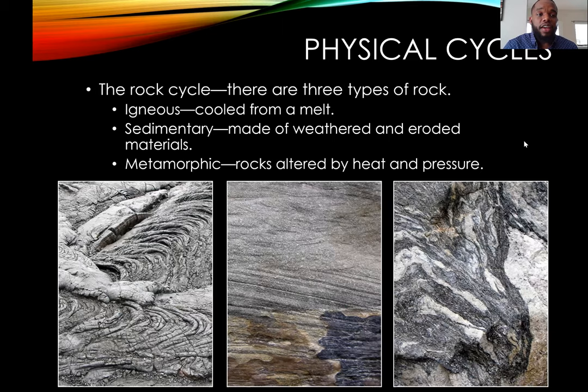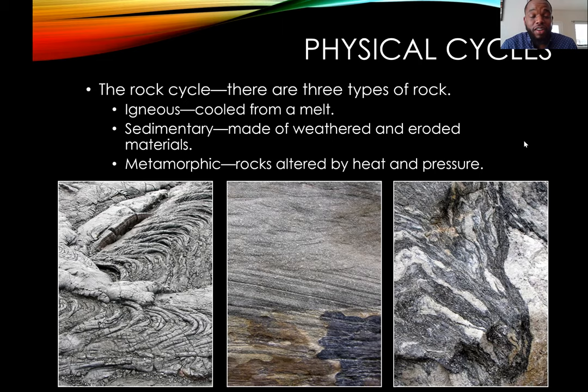Another facet is the rock cycle. We have three different types of rocks: igneous, sedimentary, and metamorphic. More igneous rocks means more volcanism, which likely means a hotter earth. More metamorphic rocks means more mountain building, which leads to a cooler earth. More sedimentary rocks means more weathering and erosion of materials, which leads to a cooler climate.